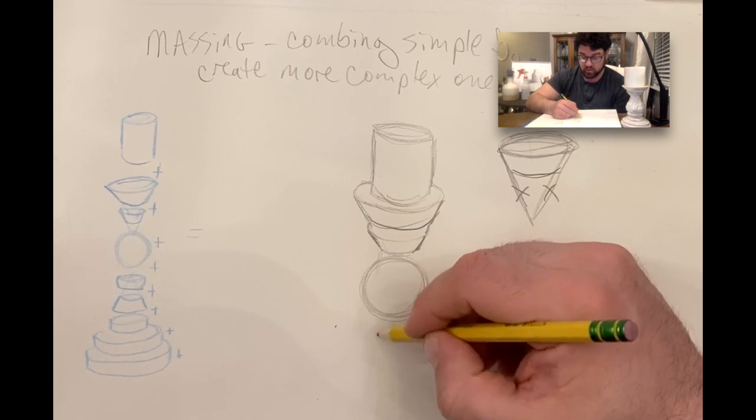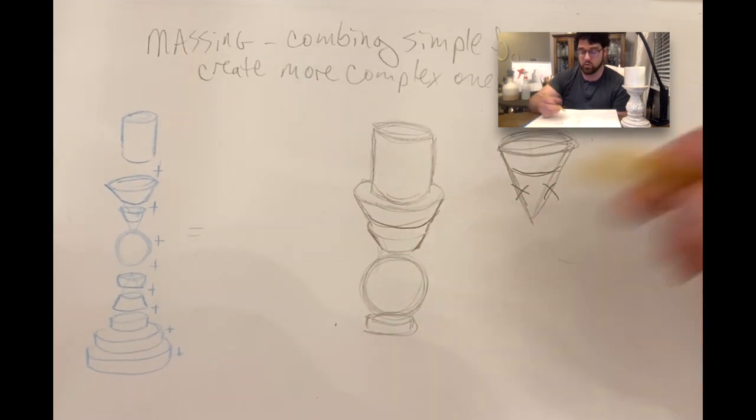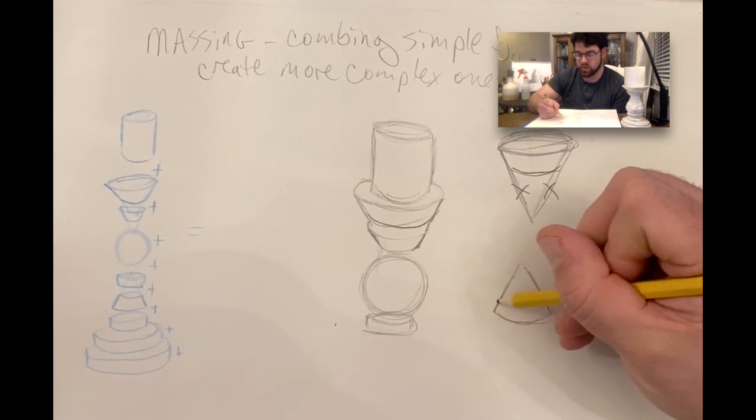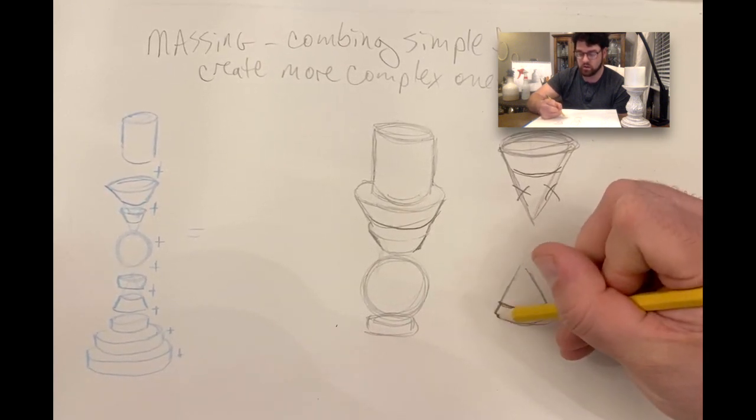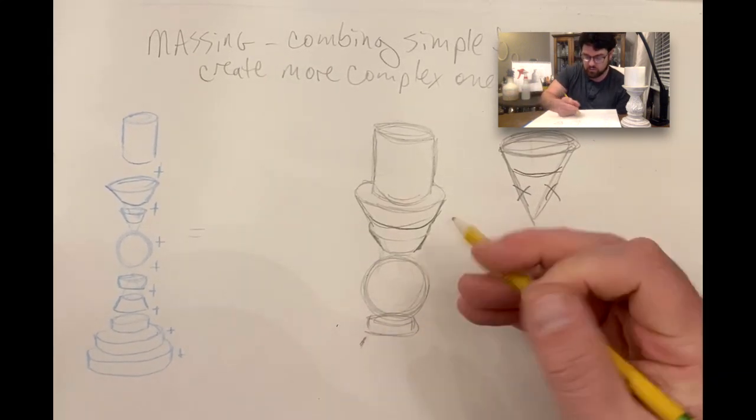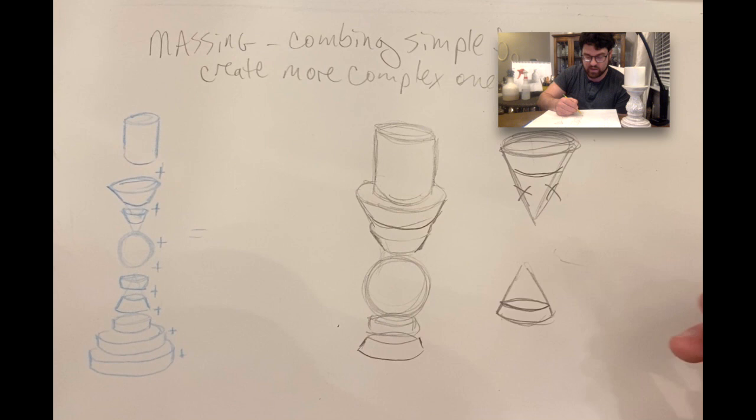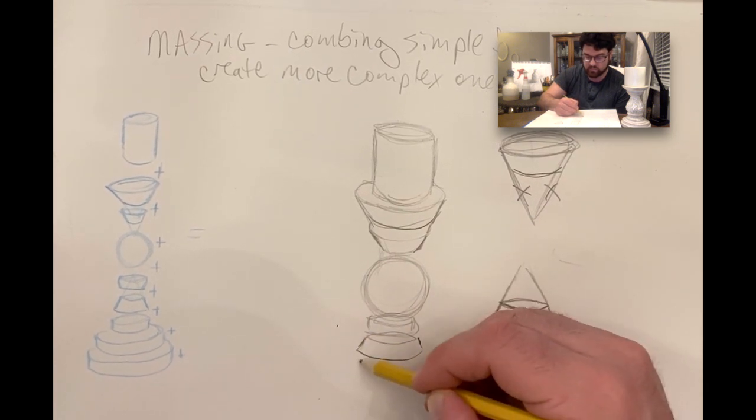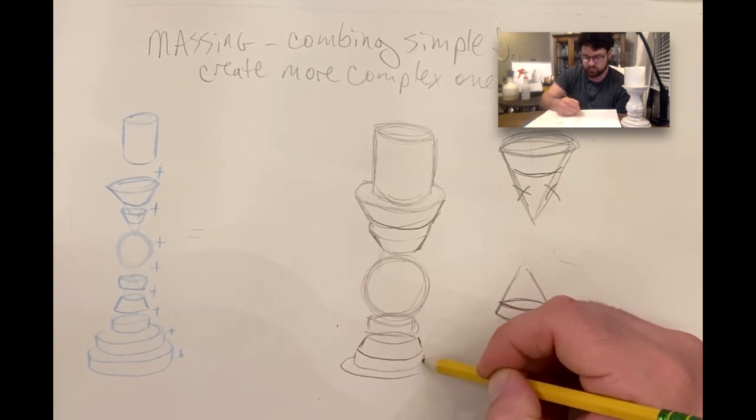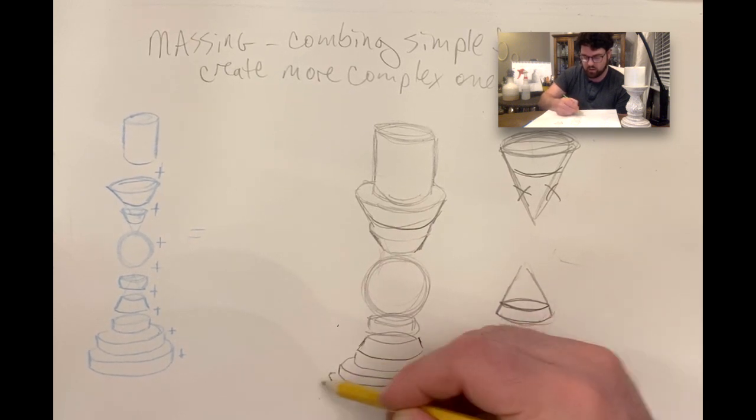Followed by another cylinder. Followed by what would be a cone if it went all the way. But, I am really stopping it closer to the base. So, I am taking this part of my cone shape and adding it here. Following that, I will have another cylinder. And a few more. And one more for the bottom of the candlestick.